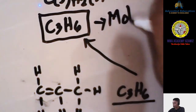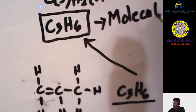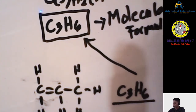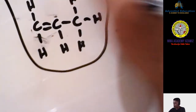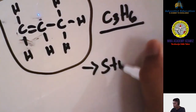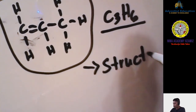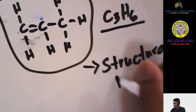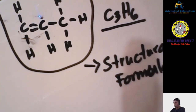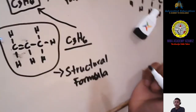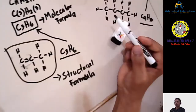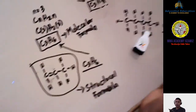For C₄H₁₀, drawing the structural formula: place 4 carbons in a chain, connect them with single bonds, then fill remaining valences with hydrogen. Carbon 1 gets 3 hydrogen, carbons 2 and 3 each get 2 hydrogen, and carbon 4 gets 3 hydrogen. Counting confirms: 4 carbons and 10 hydrogen — correct. The molecular formula C₄H₁₀ matches our structural drawing.